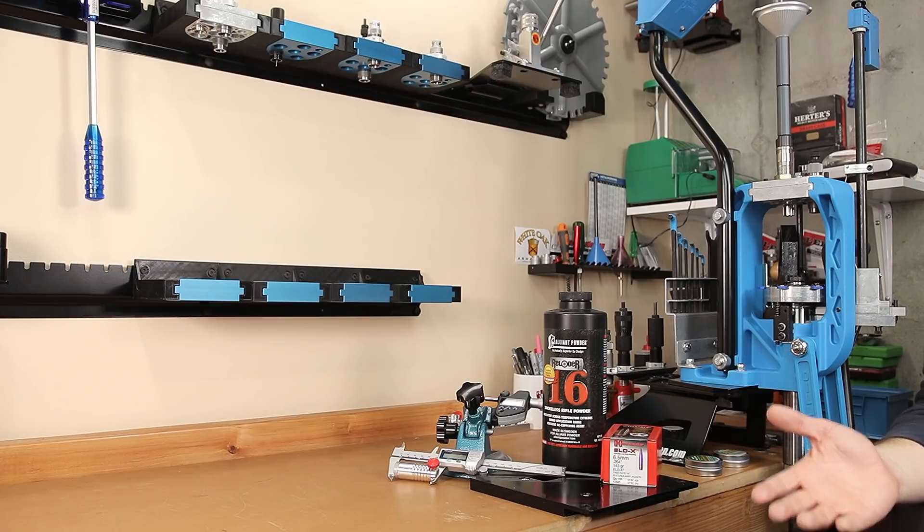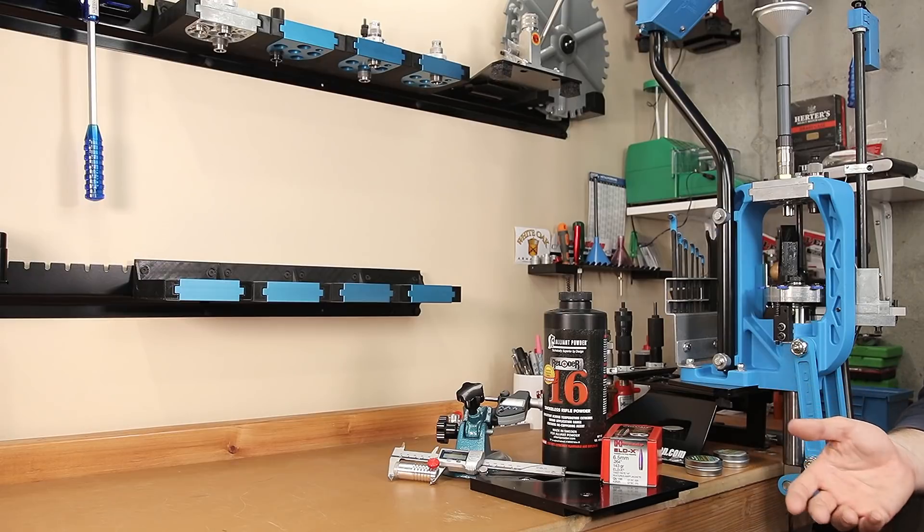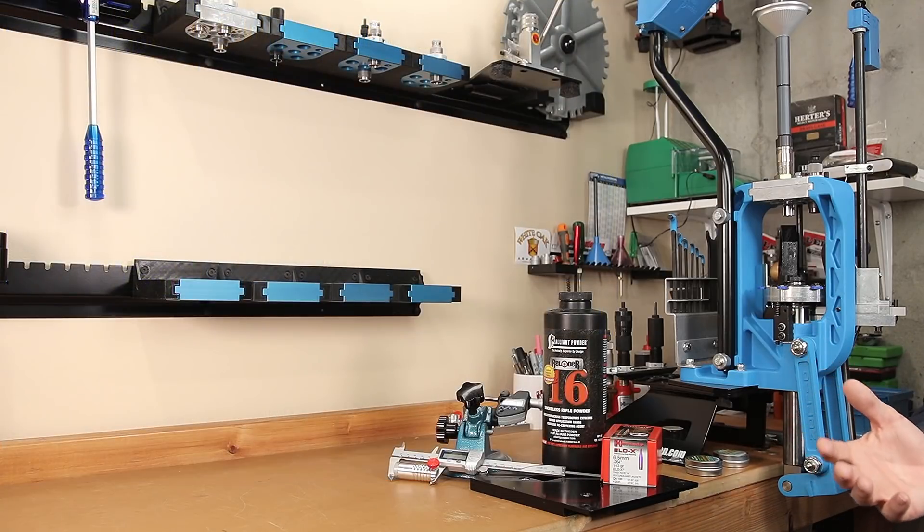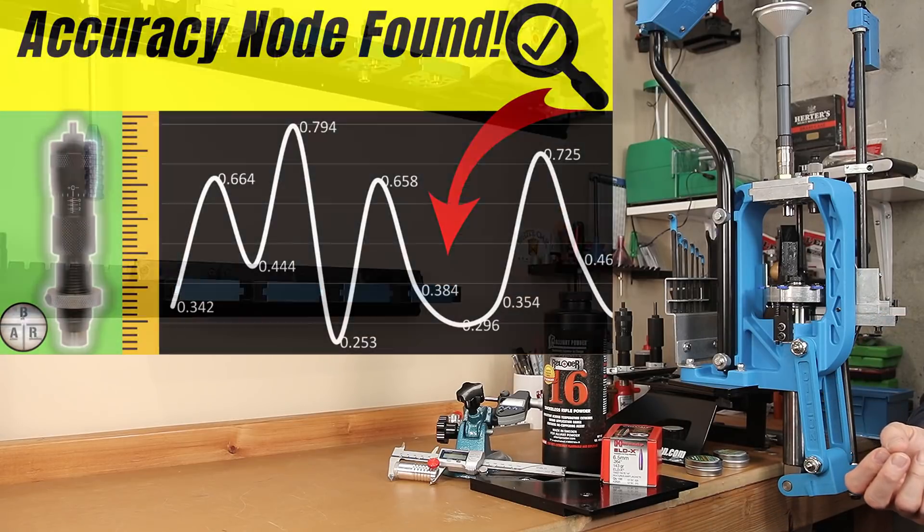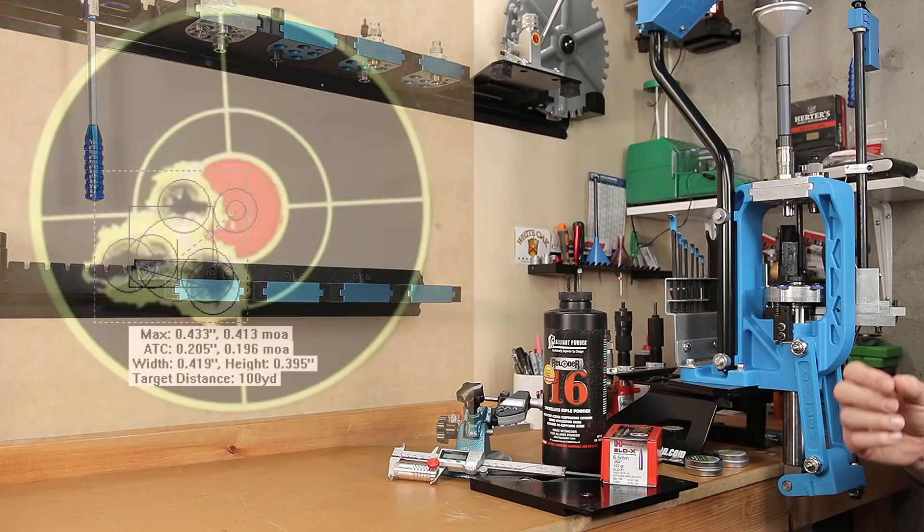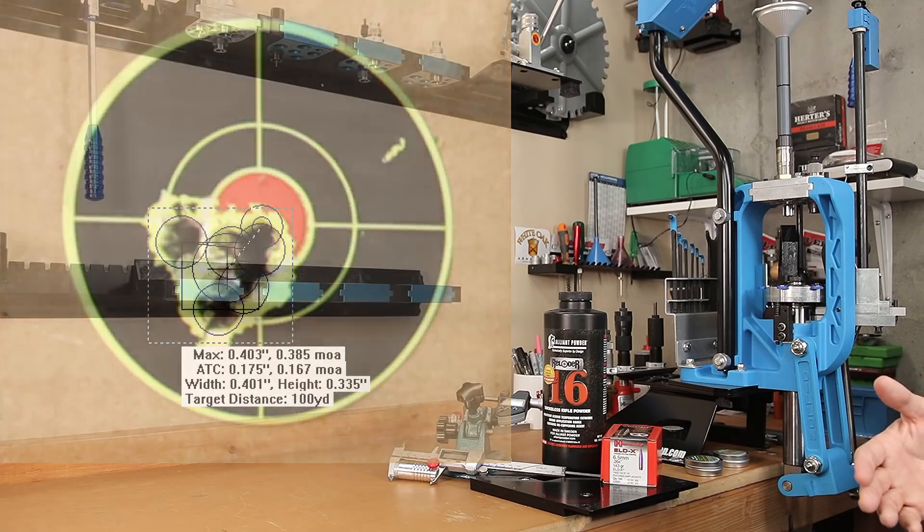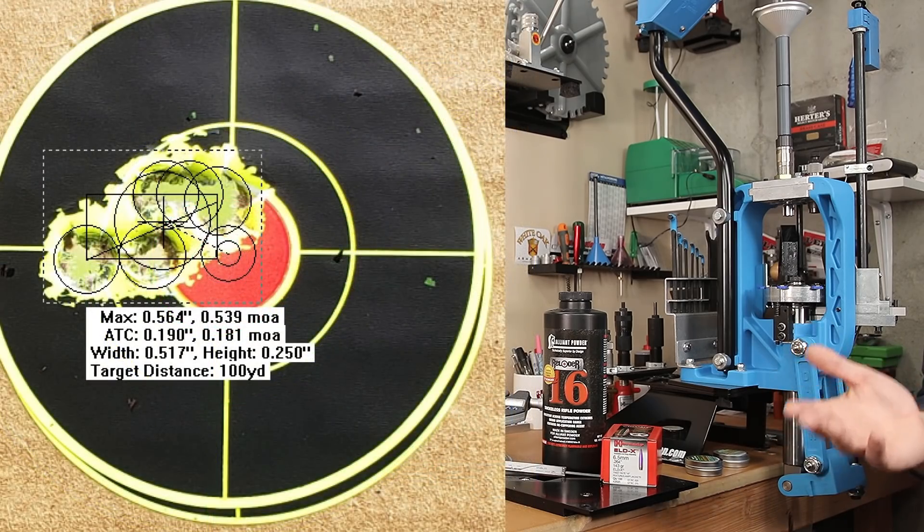When it comes to seating depth testing, if you want to call it jump testing or cartridge overall length testing, there are several procedures that everyone uses to come up with the best groups they can. However, the one I've been testing here recently on the channel was put forth by Eric Cortina in his Chasing the Lands is Stupid video. I've already demonstrated this process on the 140 grain ELDM by Hornady with what I feel is some reasonable success. Being able to achieve successive groups at 0.413 and 0.385 MOA with our previous test improvement versus the 0.6 MOA groups that we were shooting, I feel that was a success.